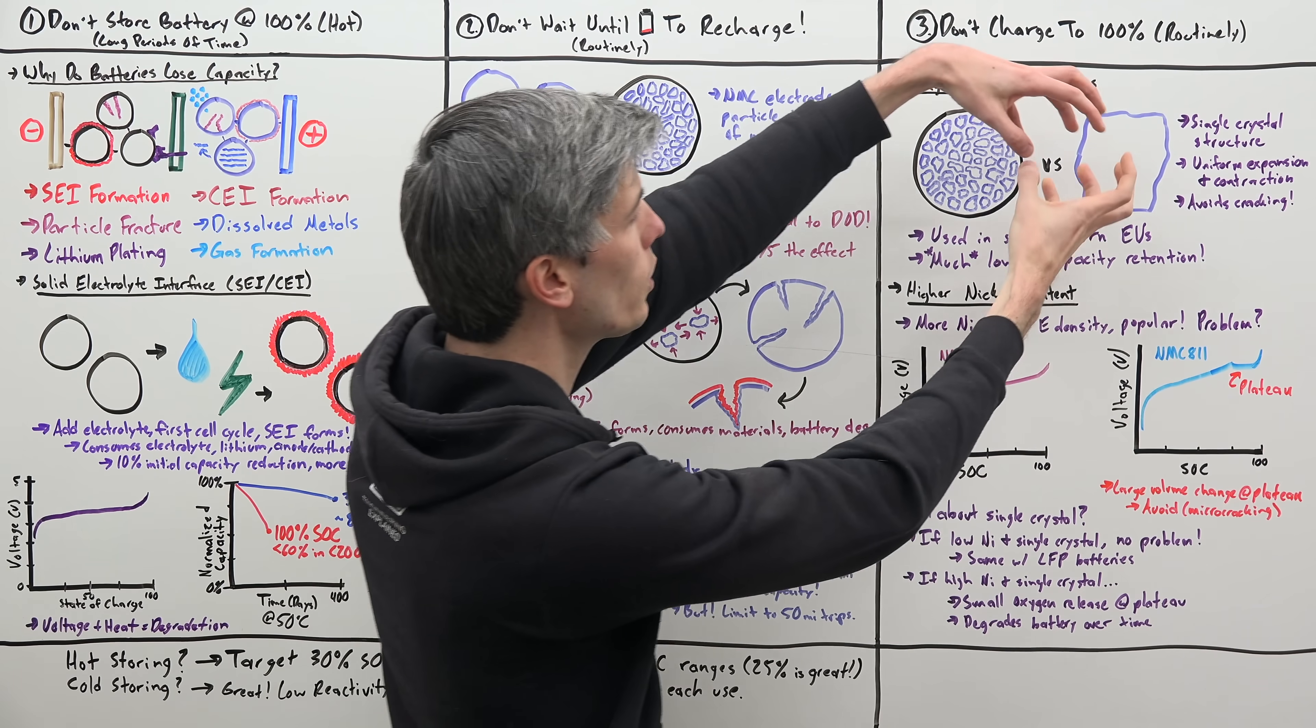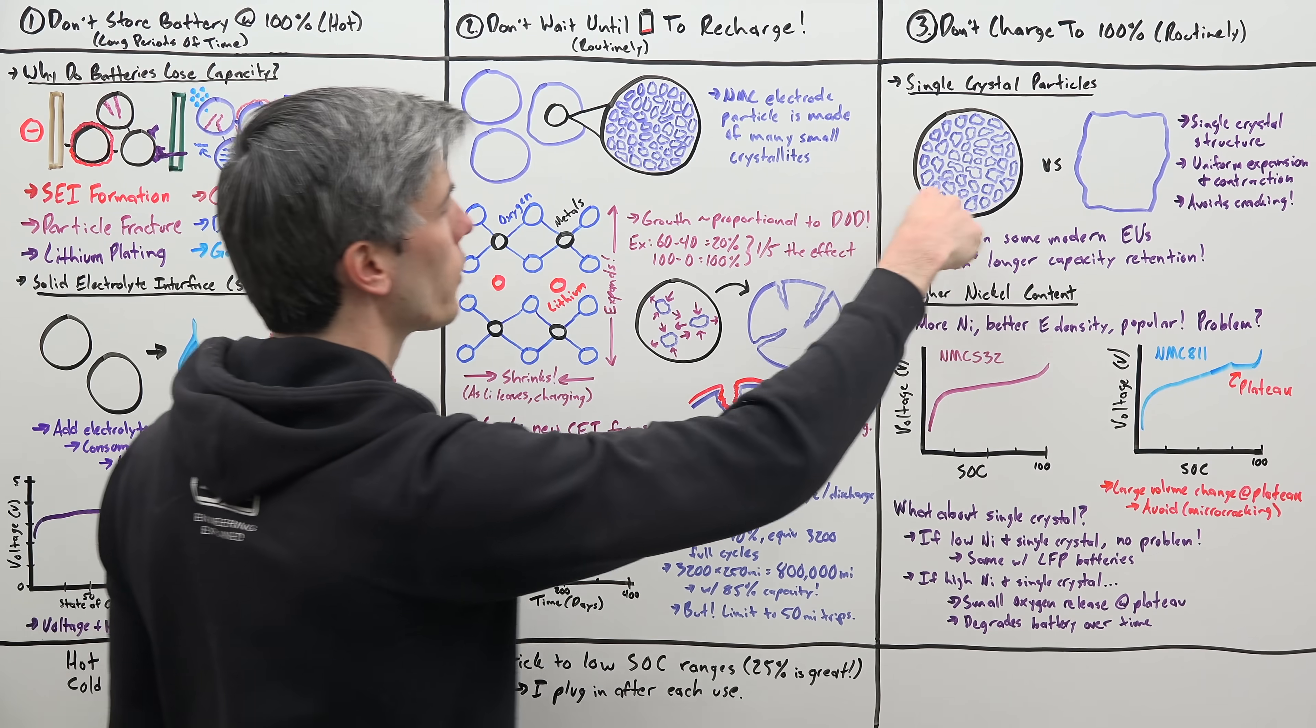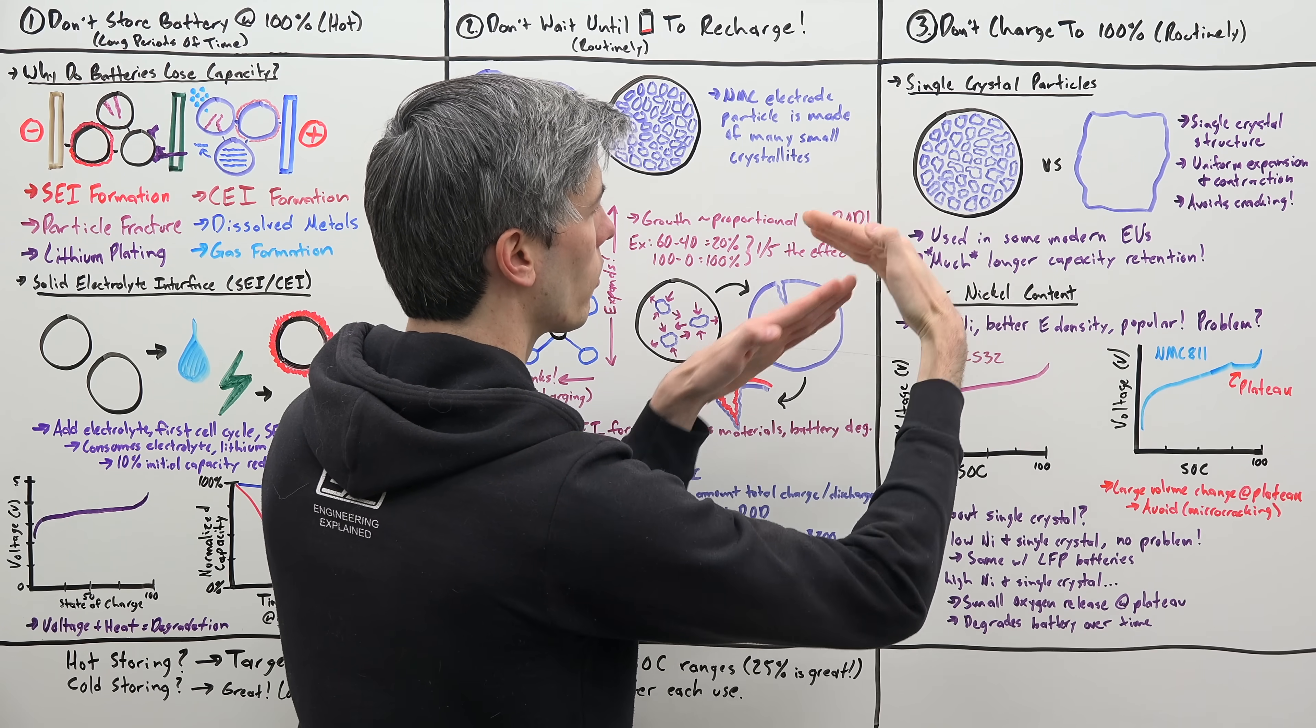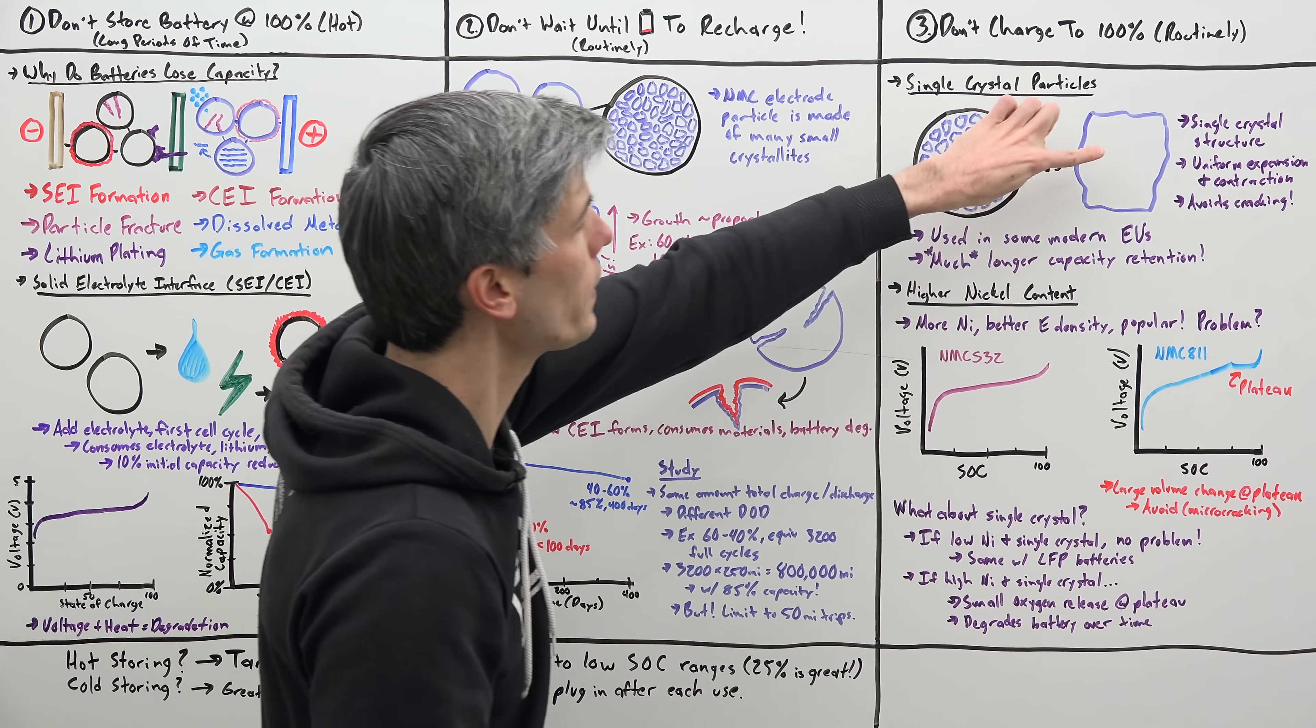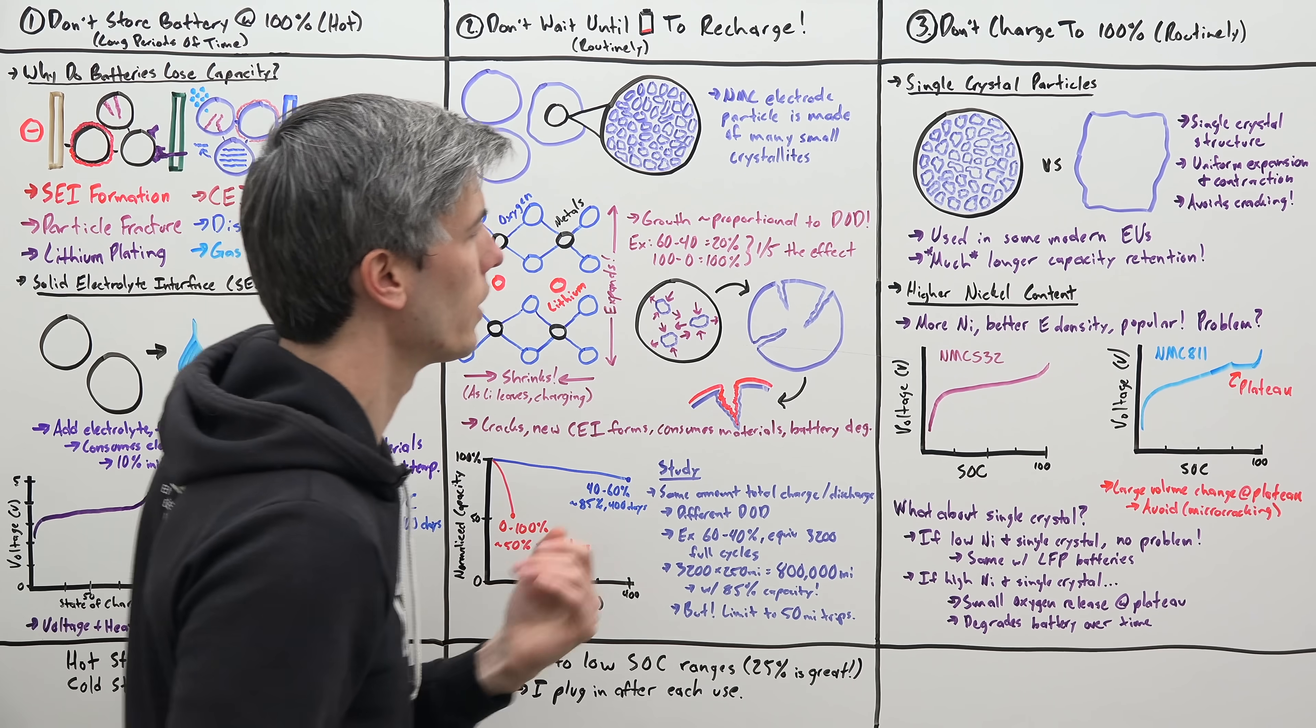So what this means is you have uniform expansion and contraction of that entire particle, rather than having a bunch of crystallites at different orientations which as they grow and contract create all these cracks. So you avoid that cracking using this single crystal structure. This is used in some modern EVs and it has much longer capacity retention.